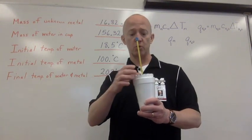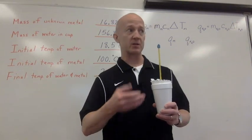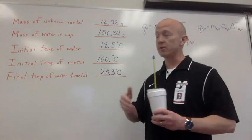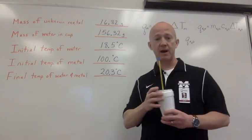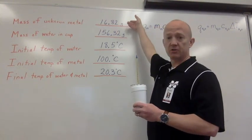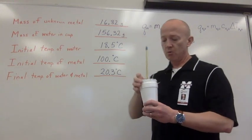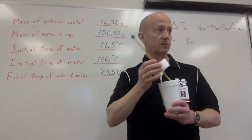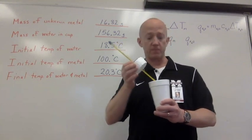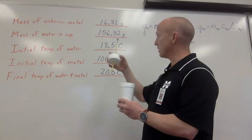So, the long and short of it is, you heat the metal to a point where you know what the temperature is. In this case, it was 100 degrees. And the water had an initial temp of 18.5 degrees inside the cup. I know the mass of the metal. I took the mass. I took the mass of the water in the cup. And then, once I got the piece of metal to 100 degrees, I took it out of the boiling water and stuck it immediately into the water inside the cup.